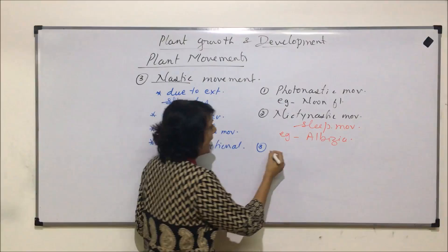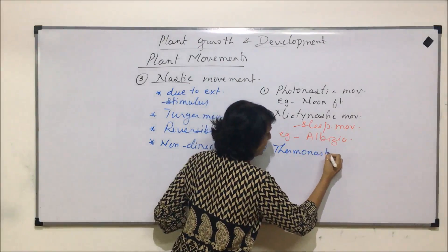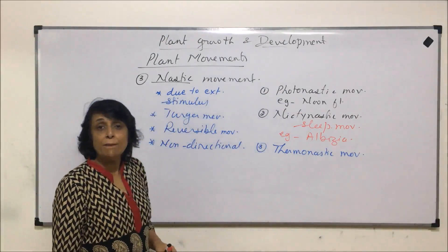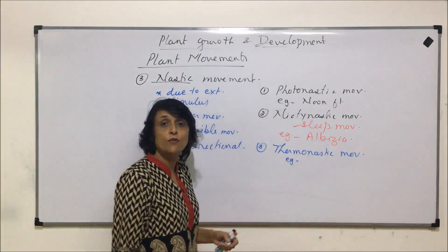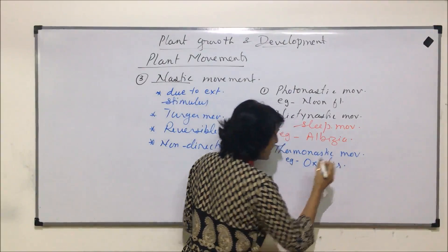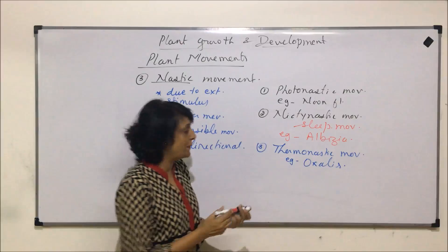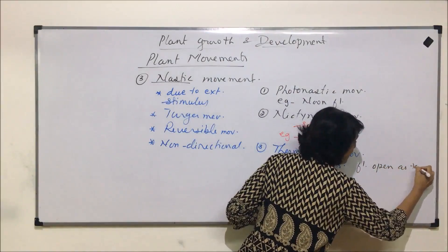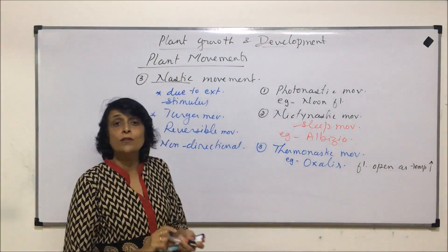When temperature is the stimulus, the movement is known as thermonastic movement. This type of movement is seen in the flowers of Oxalis — in Oxalis, the flowers bloom or open when temperature rises. So flowers open as temperature increases.